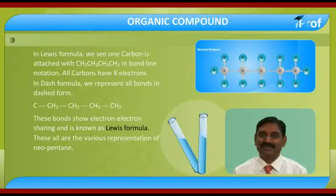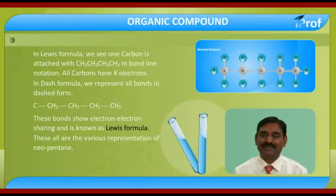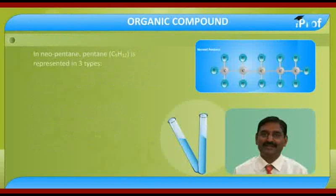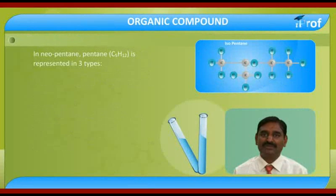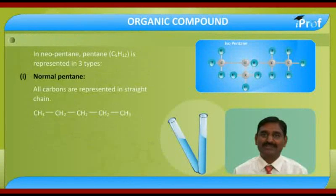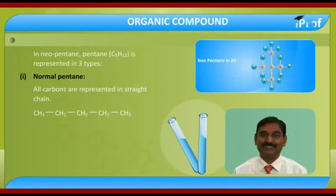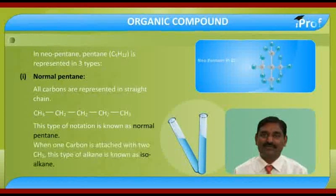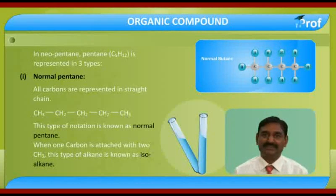This is basically a representation of an organic compound in two dimensions. In neopentane, we see all types of representation — these are basically two-dimensional representations. Pentane has the molecular formula C5H12, and we represent three types. First, all carbons in a straight chain — this type of notation is known as normal pentane: CH3, CH2, CH2, and CH3. This type of notation is known as normal pentane. When one carbon is attached with two CH3 groups, this type of alkane is known as iso-alkane.